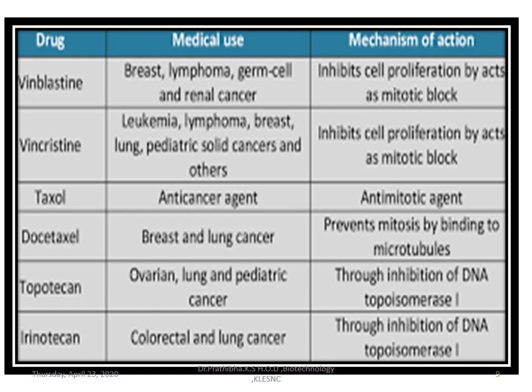There is another table representing the medical use of specific alkaloids and their mechanism of action. For example, vinblastine plays a medical role in breast cancer, lymphoma, germ cell, and renal cancer. Its mechanism of action is that it inhibits cell proliferation by acting as a mitotic block. If you want to go through this information, kindly pause the video or take a screenshot.